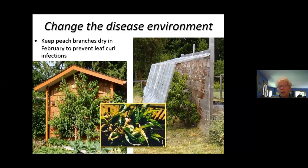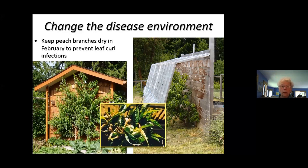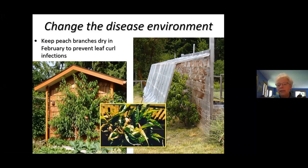Changing the disease environment is only applicable in some situations, but very effective where we can do it. You think you can't change the weather — it's going to rain all winter — but if you can keep peach and nectarine branches dry in February, which is when the infection happens, you don't get leaf curl disease. You can grow them under a house overhang, use a temporary shelter. In the old walled gardens in England, what was called a peach porch — just a little glass overhang sticking out from the brick wall — that's all it did was prevent this disease.